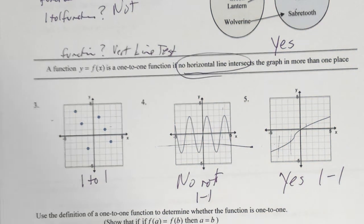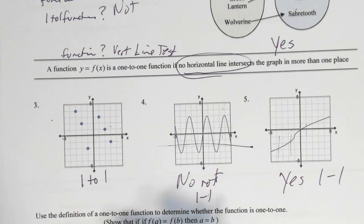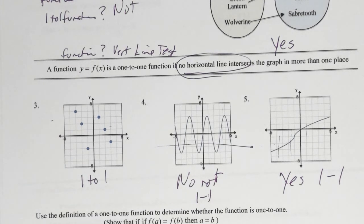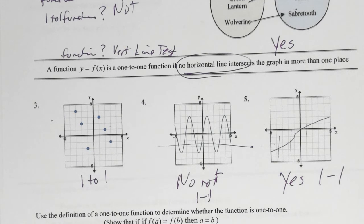Why do we need to know one-to-one? Because if I have a function and I find its inverse, if the original function is one-to-one, then its inverse function is also going to be a function. Inverses are the flips of your x's and y's.